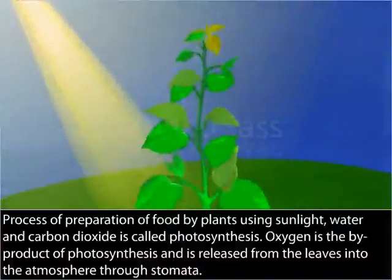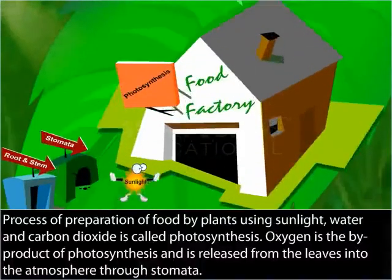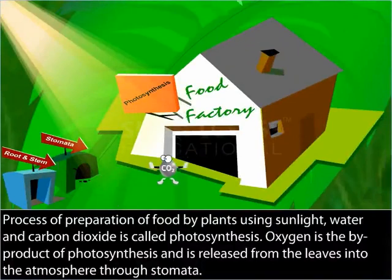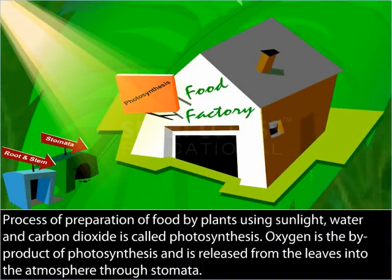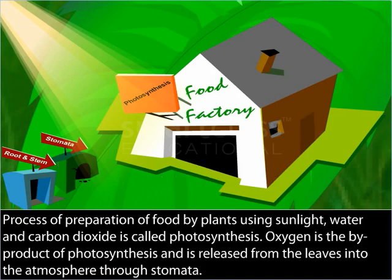In the presence of sunlight, carbon dioxide and water combine together in a series of reactions to ultimately form starch. This process of preparation of food by plants using sunlight, water and carbon dioxide is called photosynthesis.